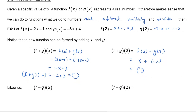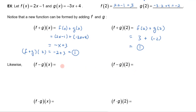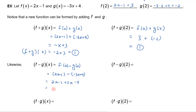We can do that with all of the operations. For example, (f minus g)(x) is just f(x) minus g(x). So that's going to be 2x minus 1, and then I subtract negative 3x plus 4. Working that through: 2x minus 1, and then minus the negative gives plus 3x, minus 4. That simplifies to 5x minus 5. And if I wanted (f minus g)(2), I plug 2 into this function: 5 times 2 minus 5, which is 10 minus 5, equal to 5.